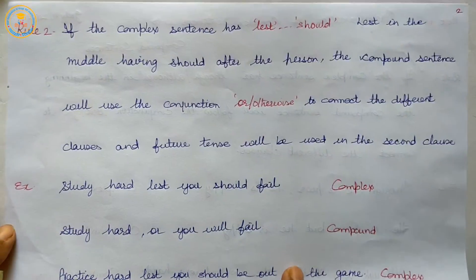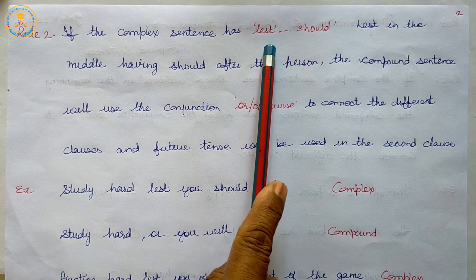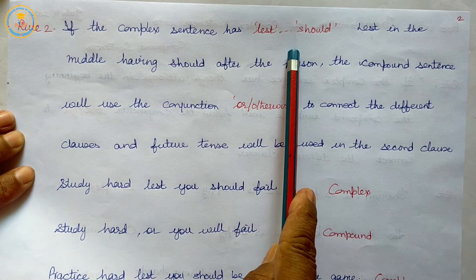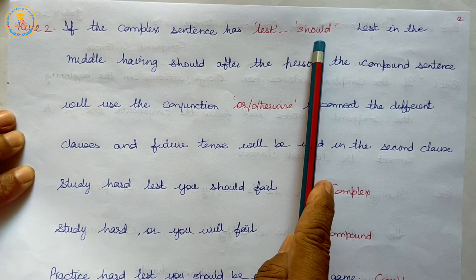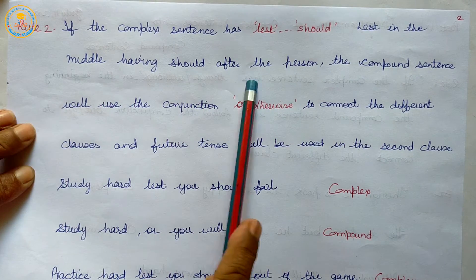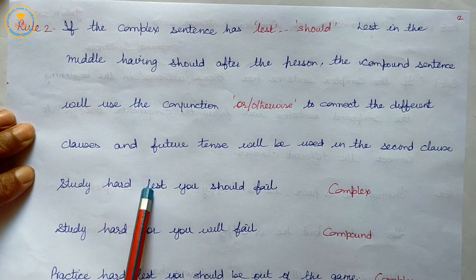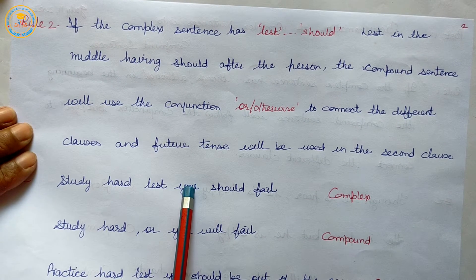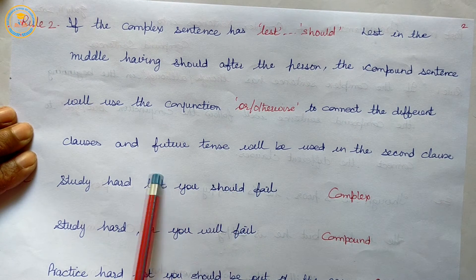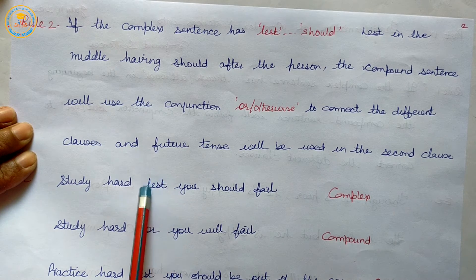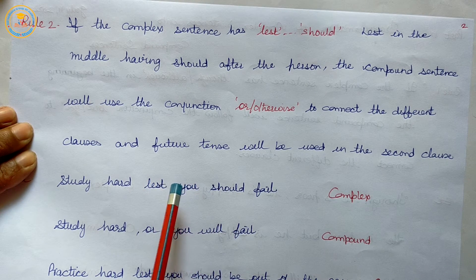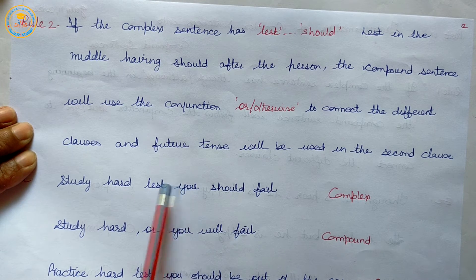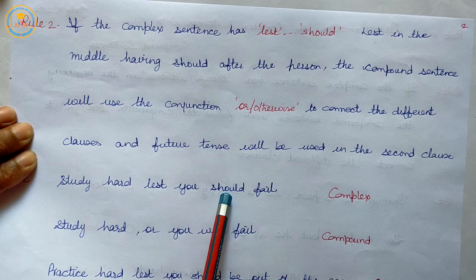Rule two: if the complex sentence has 'lest' and 'should' — with 'lest' in the middle and 'should' after the person — the compound sentence will use a different structure.